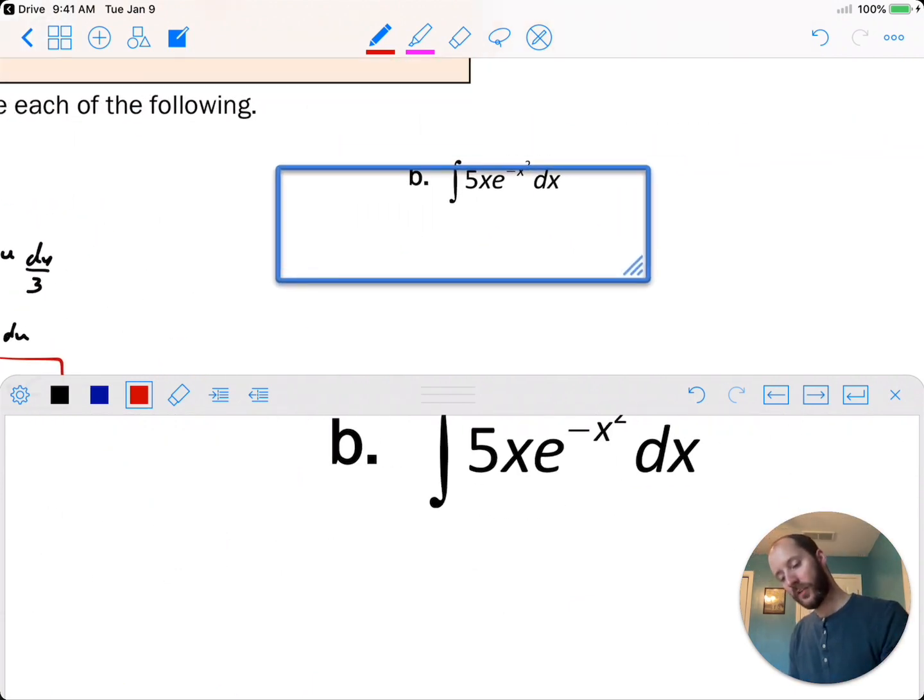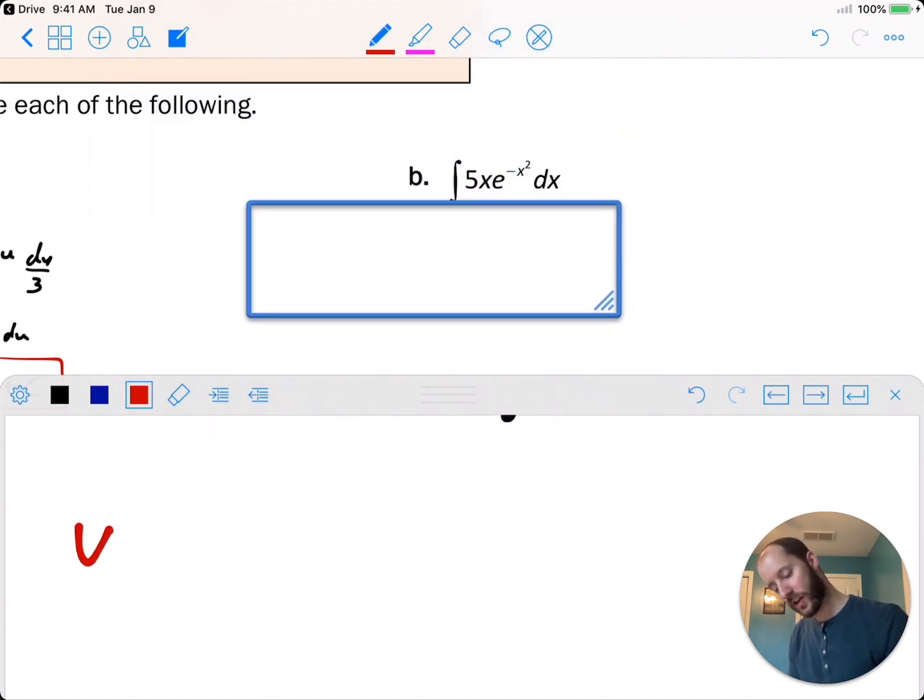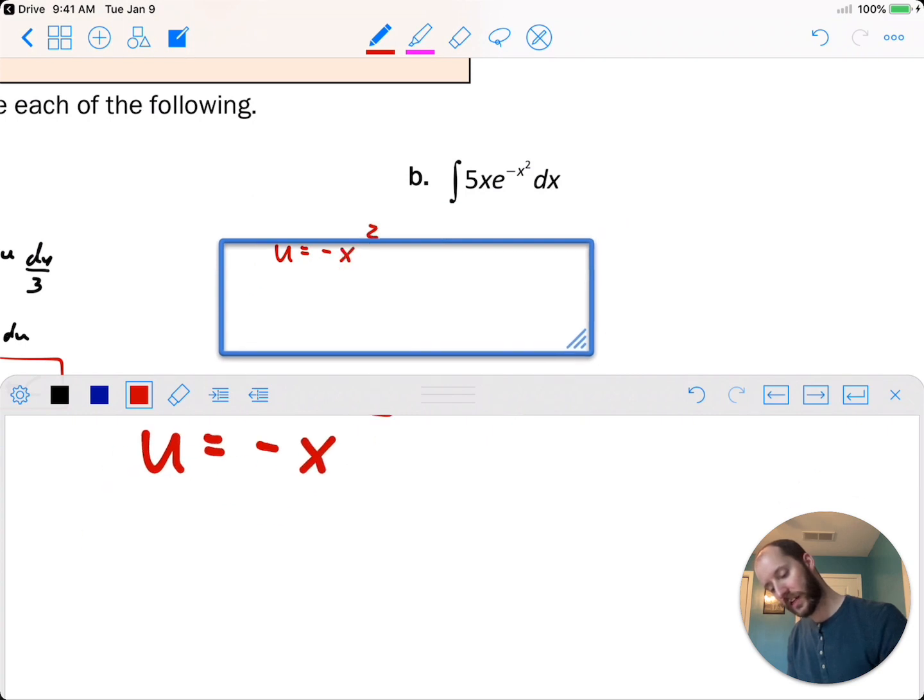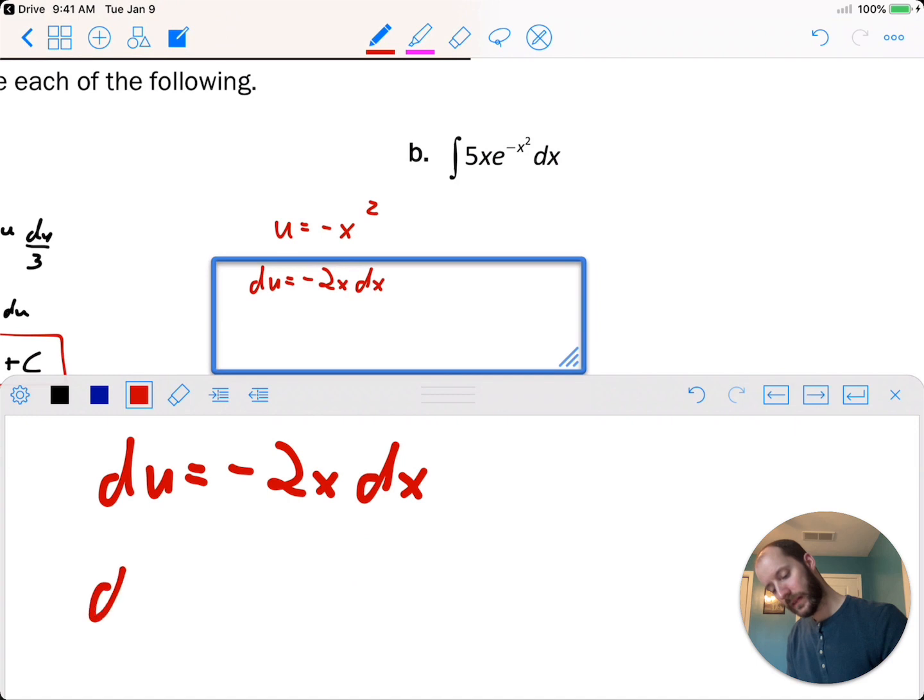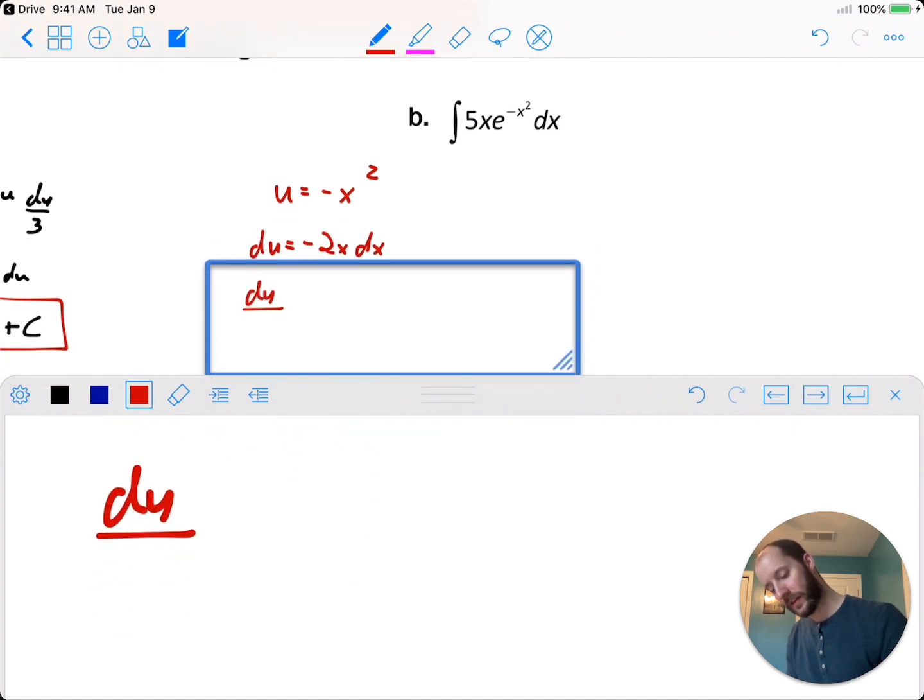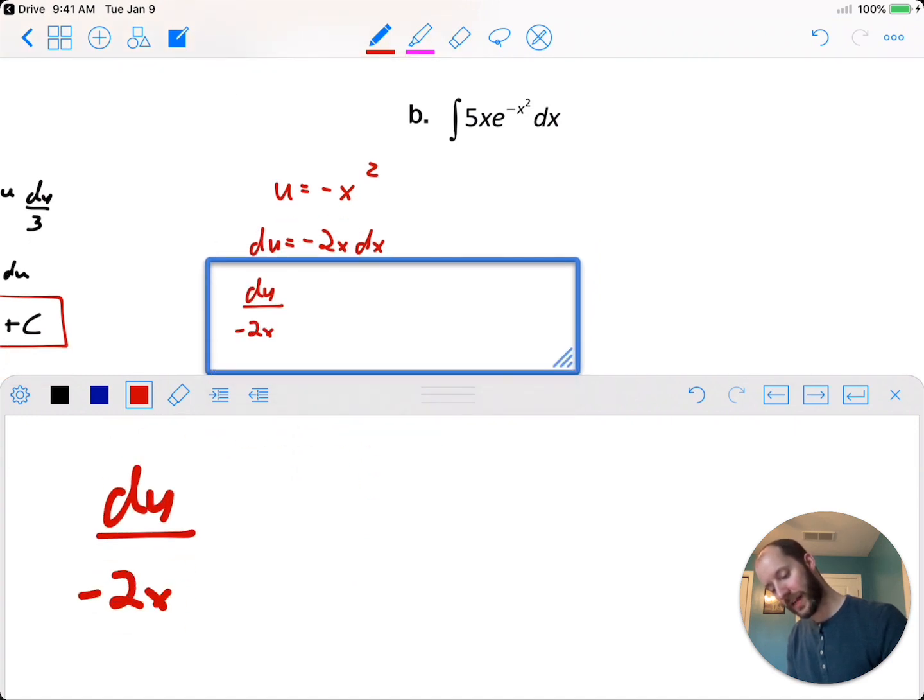Over here example b, same type of approach. To start off, u sub, negative x squared, du negative 2x dx, and du over negative 2x equals dx. Kind of take those, put them together. So integral of 5x, e to the u, and du over negative 2x.